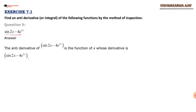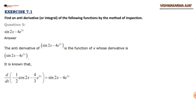Question 5: sine 2x minus 4e^(3x). The antiderivative is the function of x whose derivative is sine 2x minus 4e^(3x). We know that d/dx of (−1/2 · cos 2x − 4/3 · e^(3x)) equals sine 2x minus 4e^(3x). So this expression is our antiderivative.